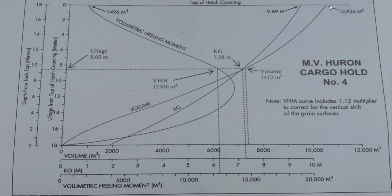Each cargo hold has a different maximum volume. As shown here, the maximum is 10,926 cubic meters, though you cannot find this exact figure in the page — it is only here to help you understand. The other lines show kg maximum at 9.89, which you can also find in the table. The third line is the volumetric heeling moment at 1,496 for the maximum full and trimmed condition. There are also tables showing trimmed and untrimmed figures for M4, which is the volumetric heeling moment.